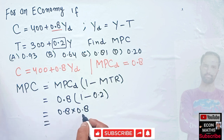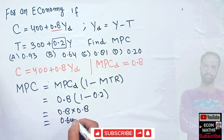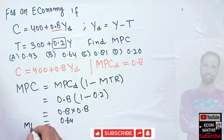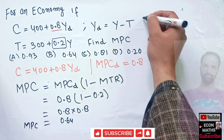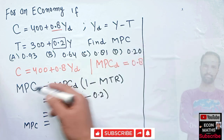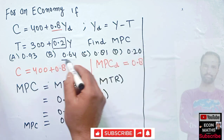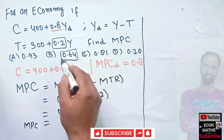So 0.8 into 0.8 gives us 0.64. We got 0.64, meaning our MPC will be equal to 0.64. The correct option is 0.64. Just remember this relationship and you will get the marginal propensity to consume.